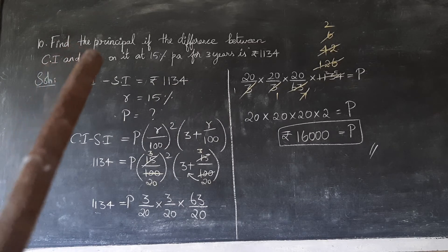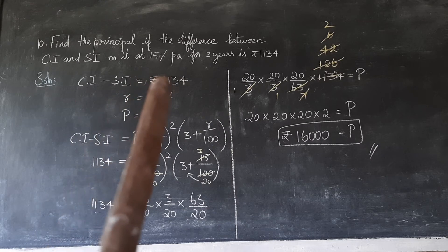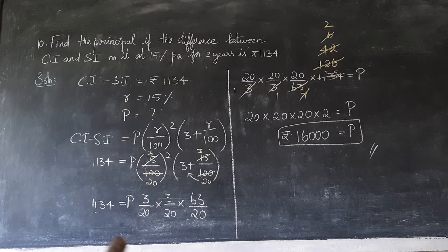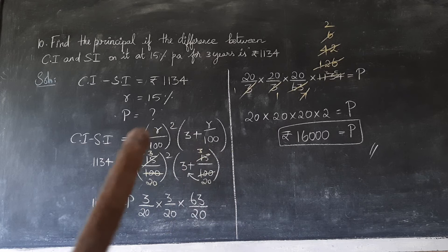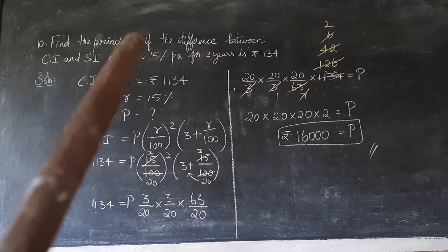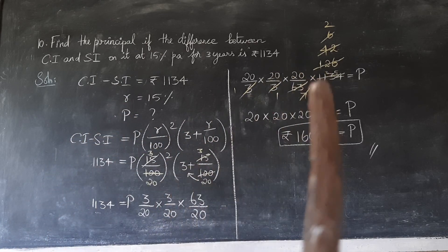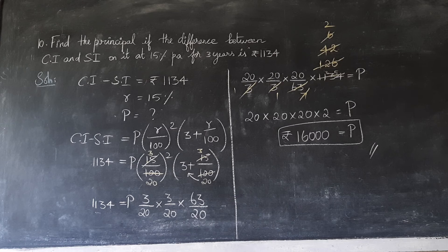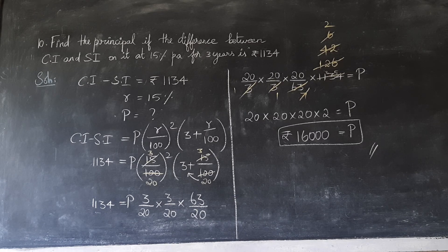So to find the principal for 3 years compound interest and simple interest with 15% rate of interest given and the difference given, the value of P that we get is 16,000. This is the formula for 3 years when the given compound interest and simple interest difference is there. You write all the given values from the question, write the formula, substitute all the values, and just cancel the numbers to get the answer. Children, watch the video twice and do the homework sums without fail. Thank you, children.